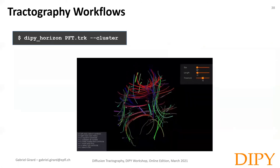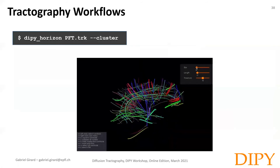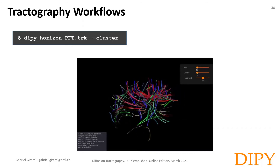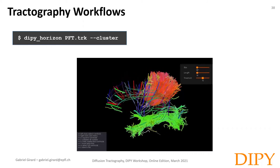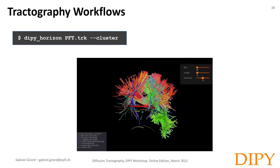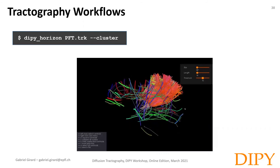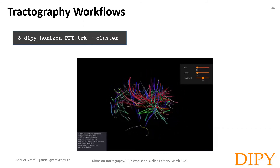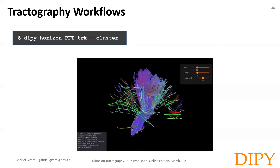The tubes are the centroids of bundles of streamlines. The larger they are, the more streamlines are in the bundle. You can filter the centroids visible by length or by size. You can also expand clusters to see all the generated streamlines. In red, the part of the corpus callosum. In green, the anterior frontoccipital fasciculus. And finally here in blue, the corticospinal tract.